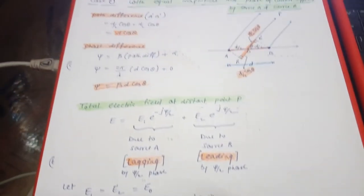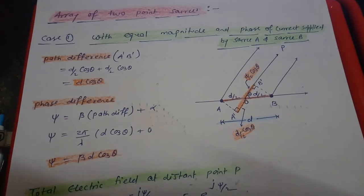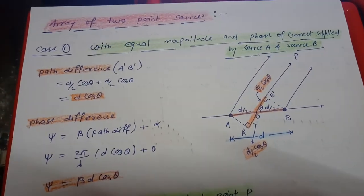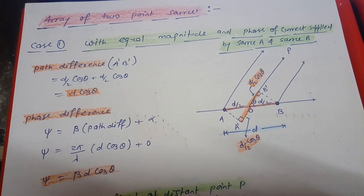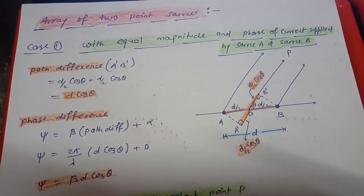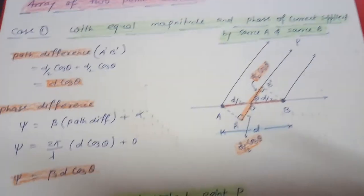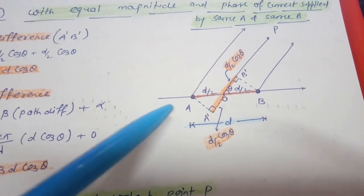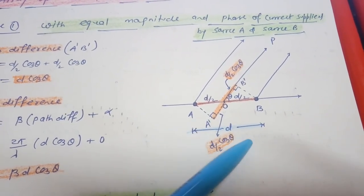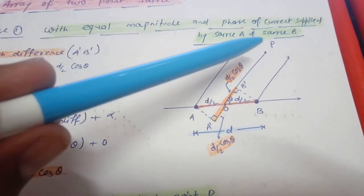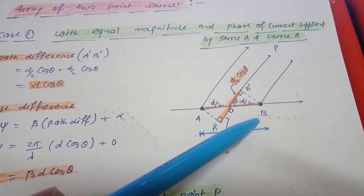Now we derive the mathematical expression for the radiation pattern for an array of two point sources. In the first case, we consider two point sources with equal magnitude and equal phase of current, supplied by source A and source B. In the figure, these two sources are separated by a distance D. We calculate the field strength at a distant point P due to the presence of both source A and source B.